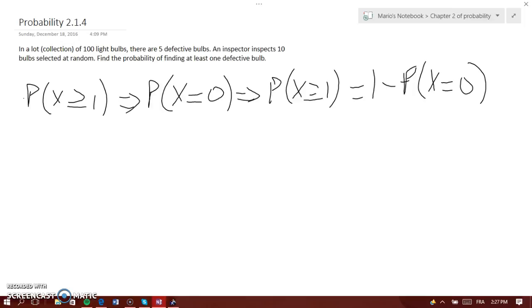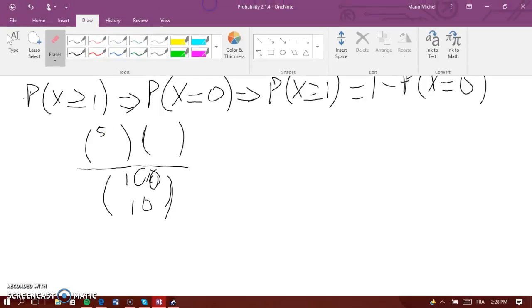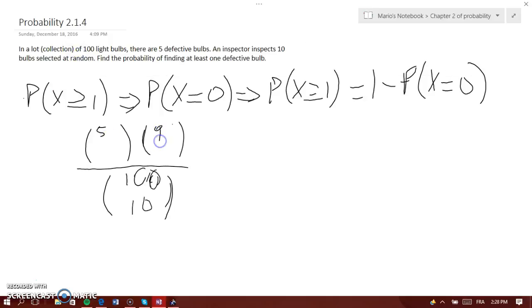We know that this is hypergeometric because we have 100 light bulbs in total. The inspector inspects 10, and we know that there are 5 defective light bulbs, which means there are 95 that are not defective.